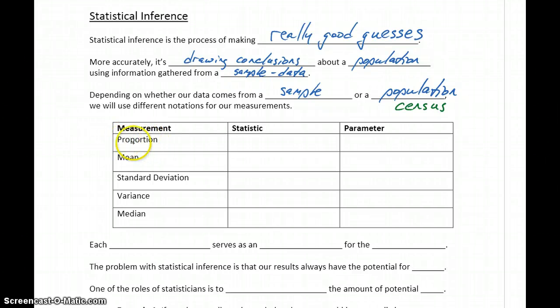For instance, if we are trying to calculate a proportion, so what percent of the population approves of the current president, our statistic which would come from a sample would be indicated as p with that little caret on top, and we call that p-hat. The parameter which comes from the population would just be a lowercase p. So we're going to look at sample data, calculate p-hat, and use that to make an estimate about p.